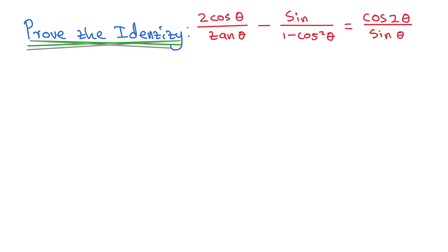They want us to prove the identity: 2 cos θ over tan θ, minus sin θ over 1 minus cos²θ, equals cos 2θ over sin θ. When you do identities, the first thing you have to consider is to take the most complex side so that you can simplify.